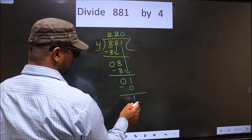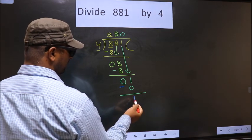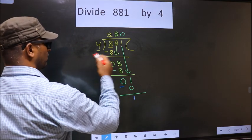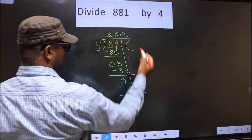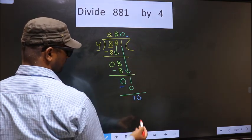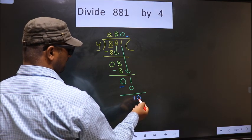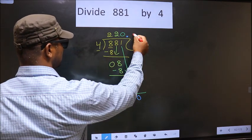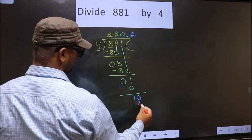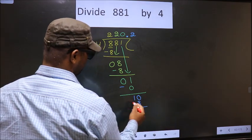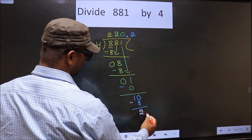Over here we did not bring any number down. And 1 is smaller than 4. So now you can put dot take 0 here. So 10, a number close to 10 in 4 table is 4 times 2 is 8. Now you subtract 10 minus 8, 2.